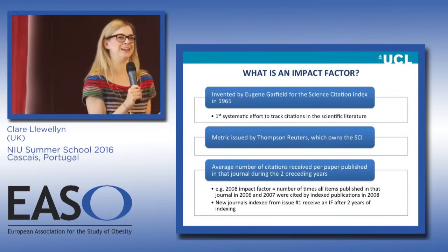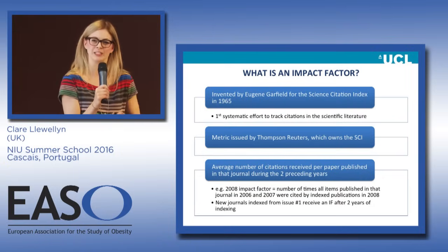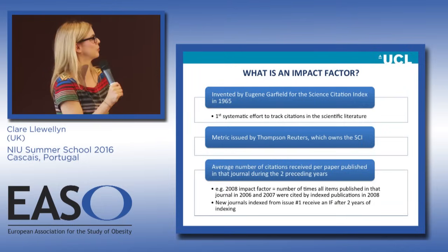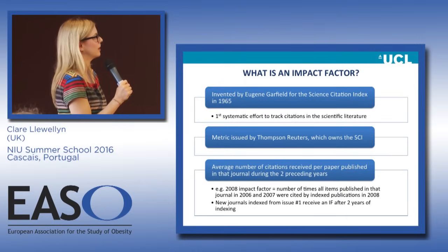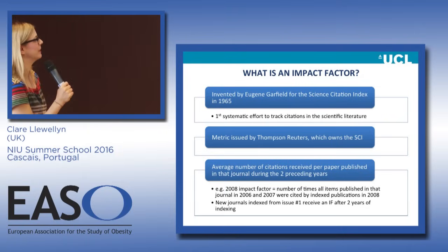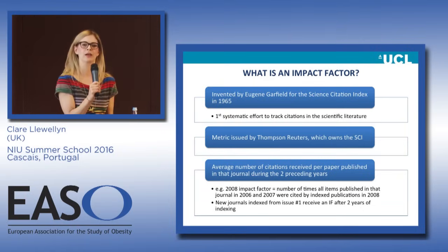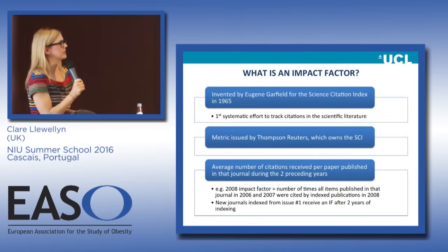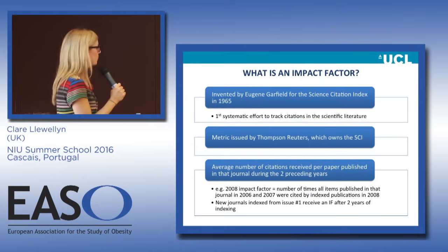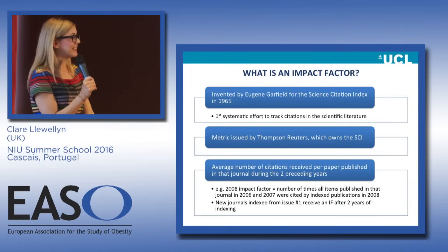I actually didn't technically know what an impact factor was, so when I sat down to write this talk I had a look, and it's quite intriguing. The impact factor was invented by a guy called Eugene Garfield, who looks strikingly like Einstein. He first thought about it in 1955, thinking about how we could get some system for tracking citations of publications. In 1965, something called the Science Citation Index was produced, and that's when the impact factor really came on board.